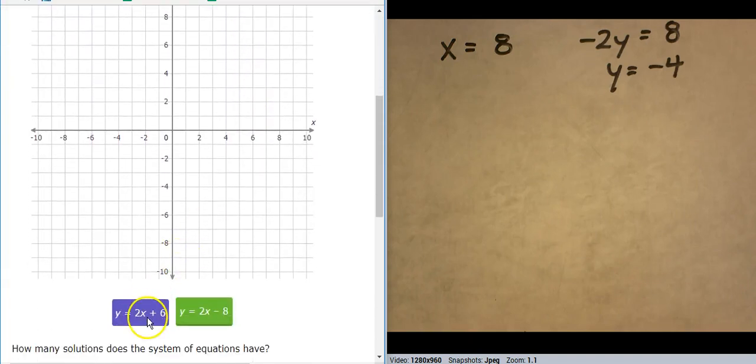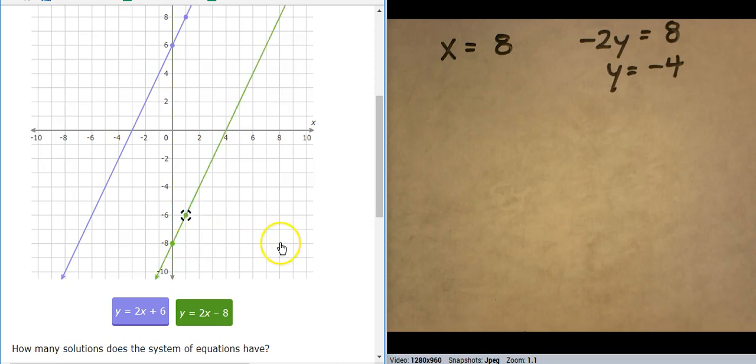All right. Both of these are in slope-intercept form. That's nice. So start at six. Up two over one. Start at negative eight. Up two over one. No solution.